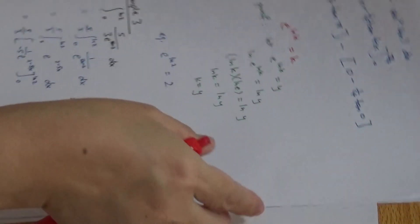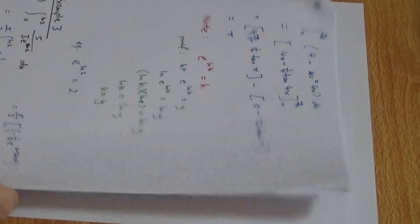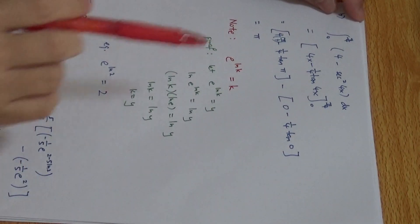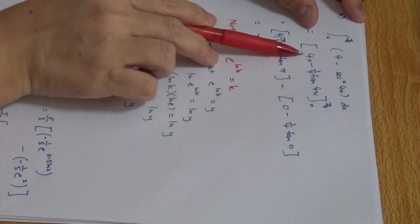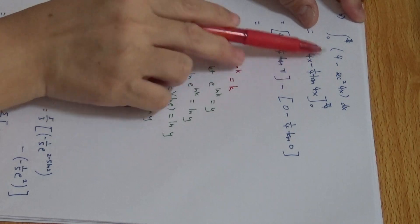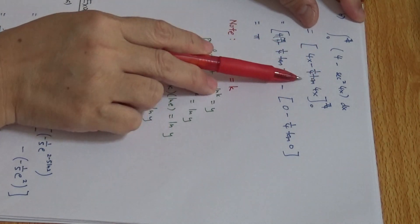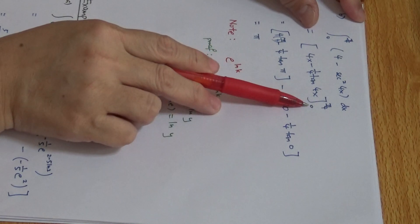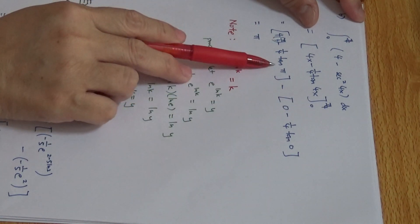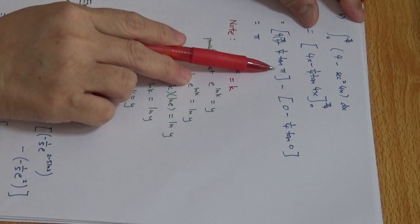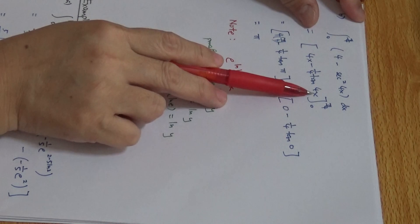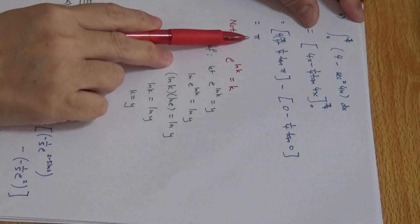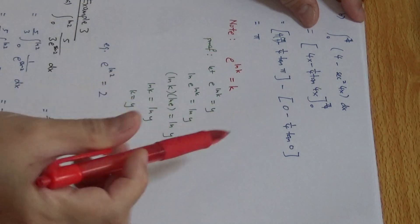Example 2 part B is also the same. We integrate this expression: 4 becomes 4x, and this term becomes one-quarter tangent 4x. The limits are pi over 4 and 0. We plug in pi over 4 — when we plug in pi over 4, this becomes pi — and we get the result.